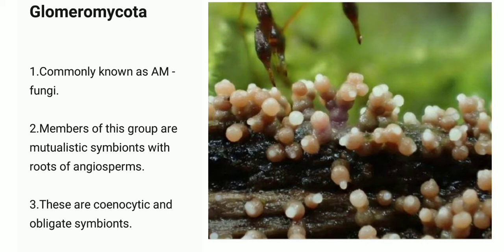Point 3: These are coenocytic and obligate symbionts. Coenocytic means they are multi-nucleate. On the screen you can see the image of Glomeromycota.